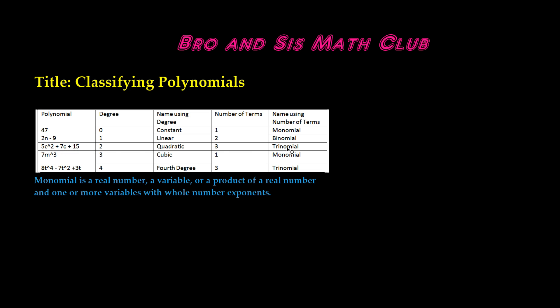Such as a tricycle, because a tricycle has three wheels, and a triangle has three sides and three angles. 7m cubed is a monomial because it is a single term. And our last example, 8t to the 4th minus 7t squared plus 3t has three terms, so this is also a trinomial.